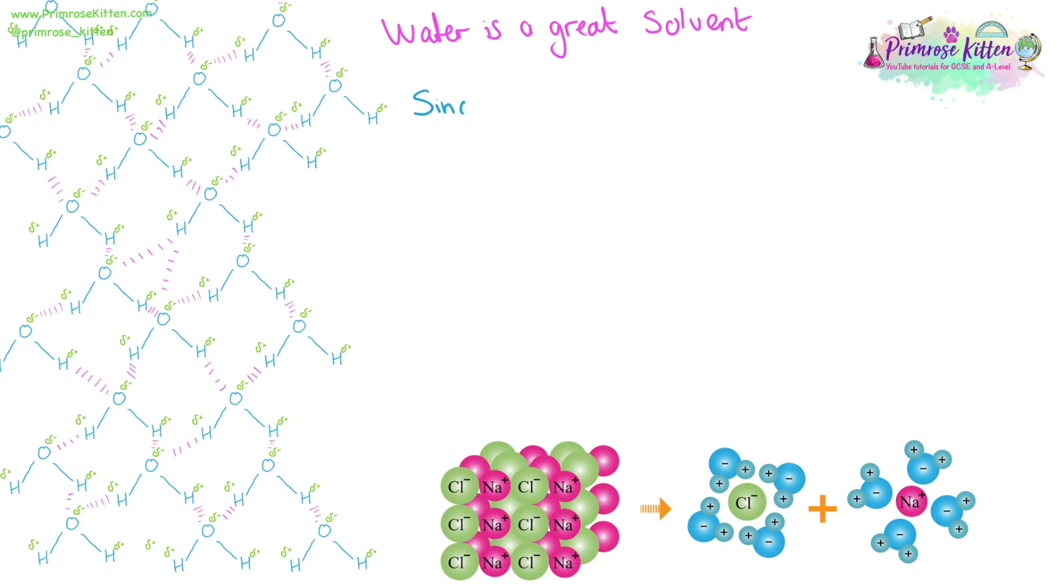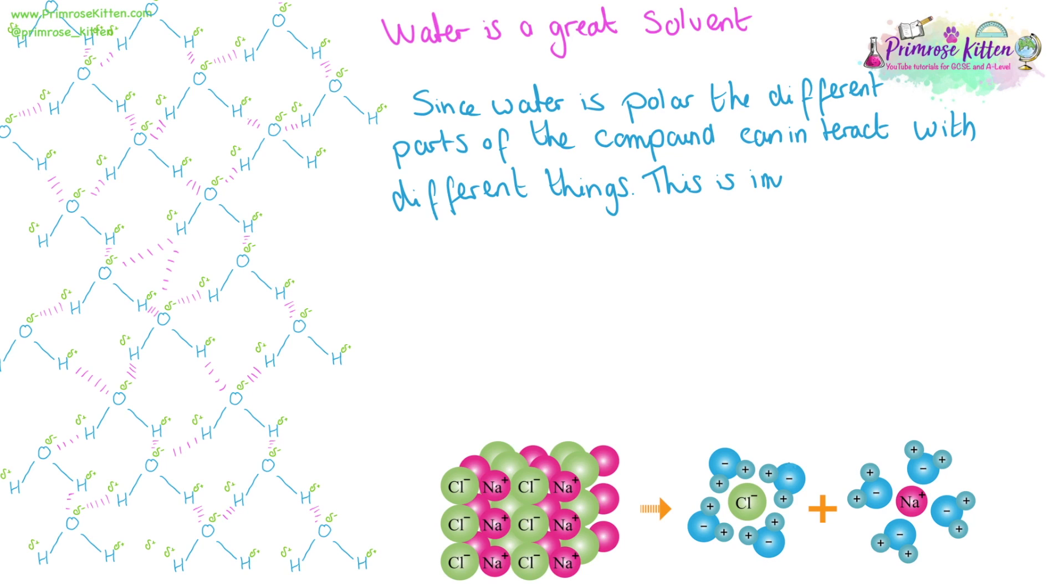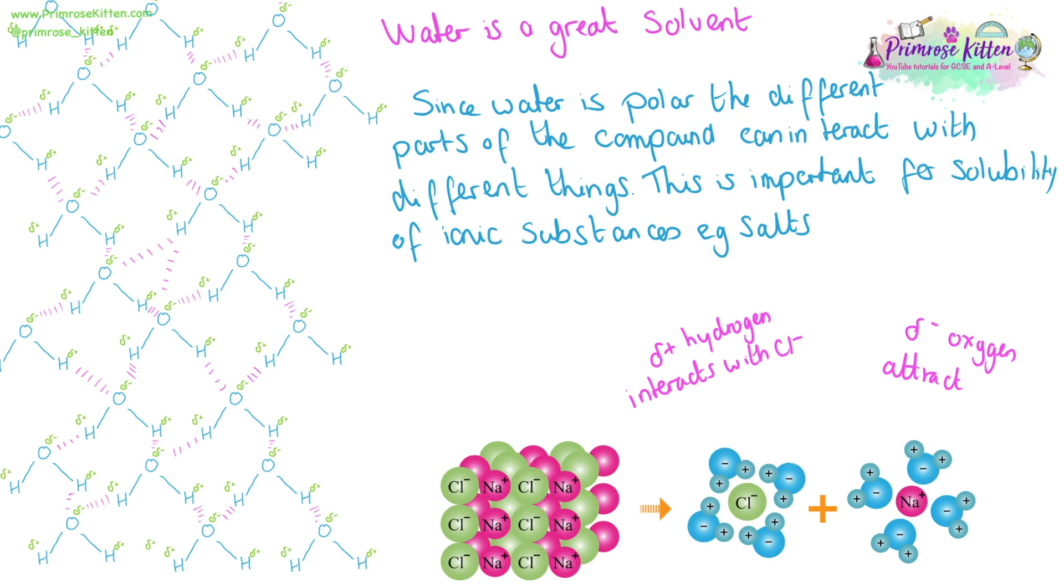Water is a great solvent. And we're going to look at the example of salt NaCl here. Since water is polar, the different parts, the slightly negative oxygen, the slightly positive hydrogen, can interact with different things. And this is important for solubility. The slightly positive hydrogens will be attracted to the Cl minus. Whereas the slightly negative oxygen will be attracted to the Na plus. The result will be that the ionic lattice is slowly ripped apart from the outside, one ion at a time, as individual ions form electrostatic attractions with the different parts of the water.